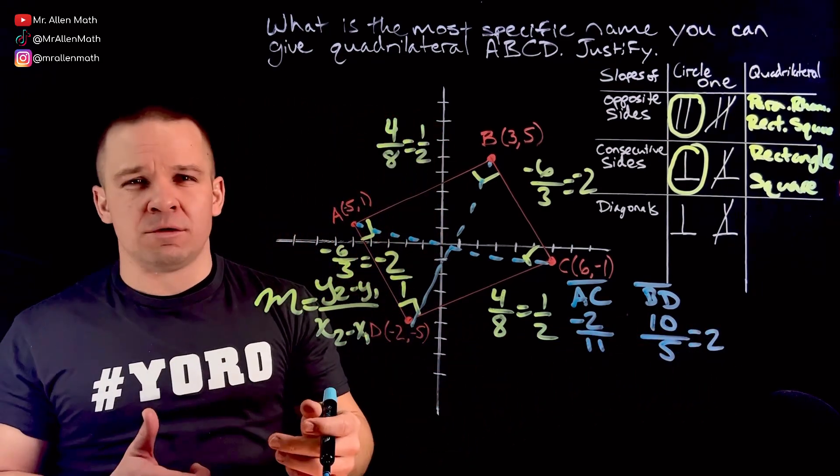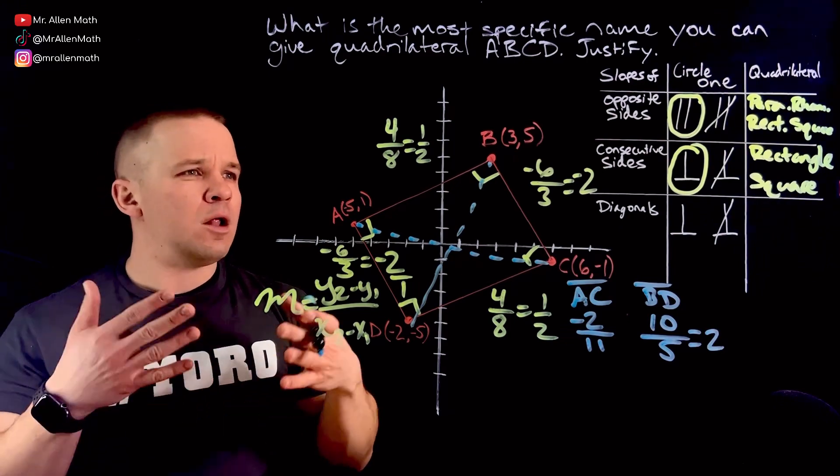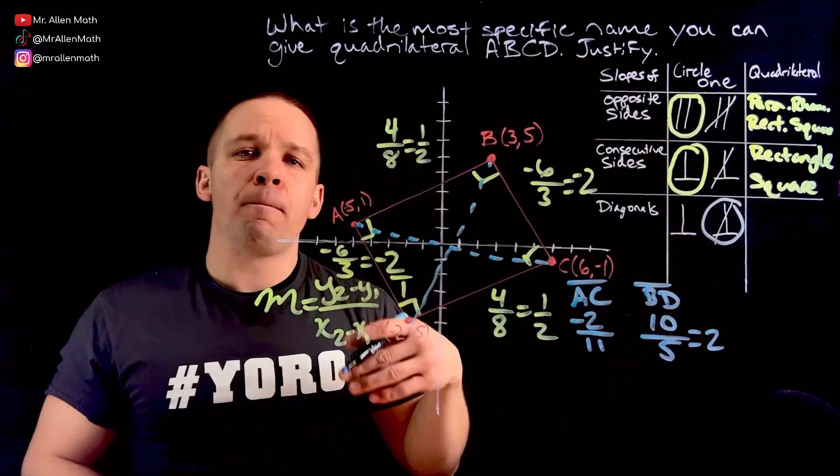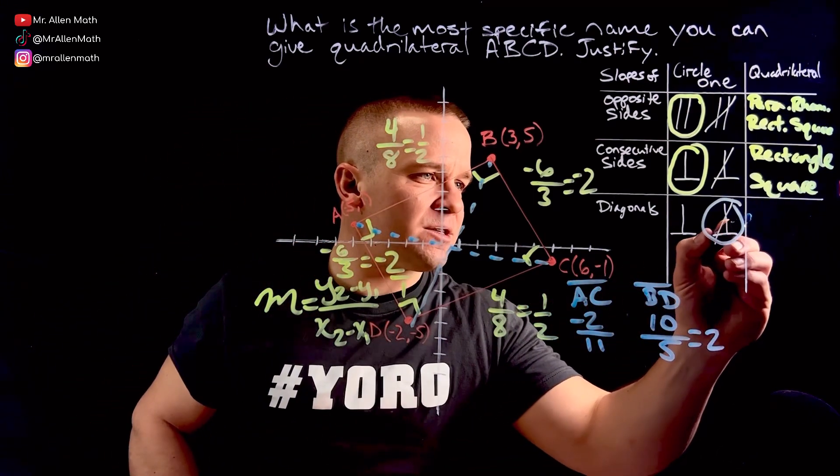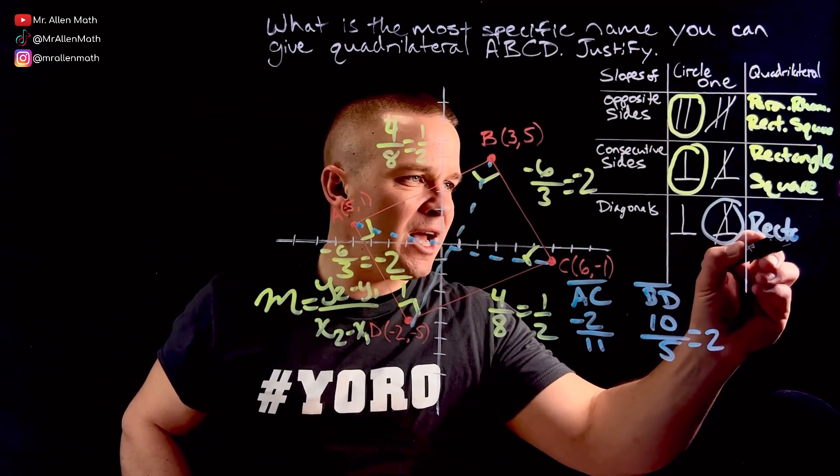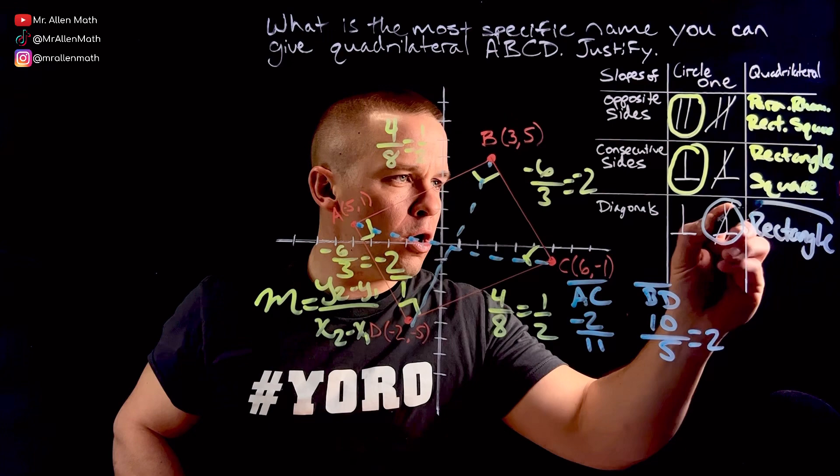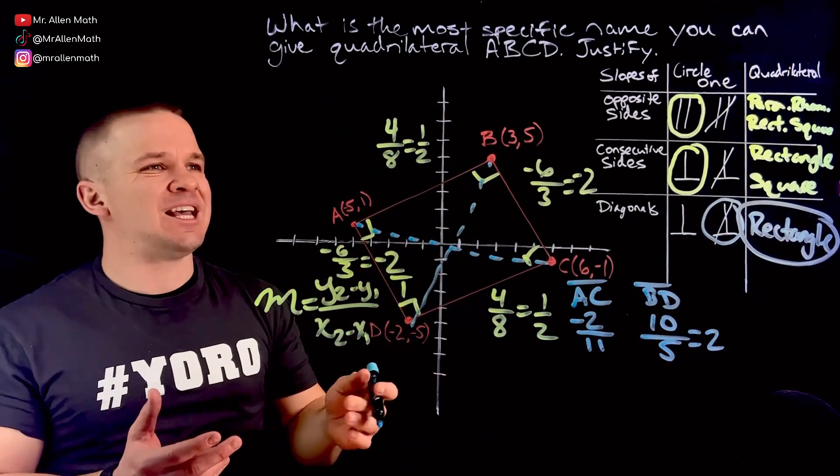Well, are those two opposite reciprocals of each other? No. So the diagonals are not perpendicular. Therefore, my answer is a rectangle. Final answer. That's it.